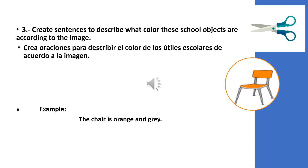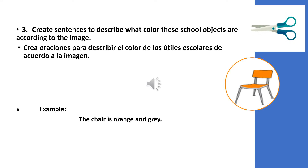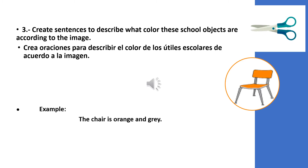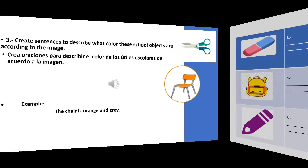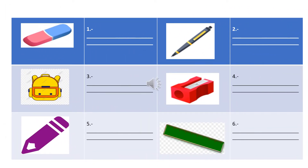Number 3: Create sentences to describe what color these school objects are according to the image. Crea oraciones para describir el color de los útiles escolares de acuerdo a la imagen presentada. Ejemplo: aquí en el círculo tengo una silla y esa silla es gris y anaranjada. The chair is orange and gray. Observen las imágenes, detengan el video para que puedan captar las actividades.